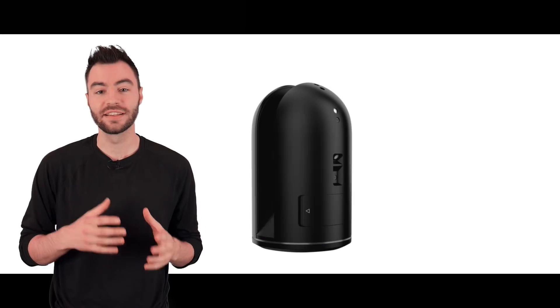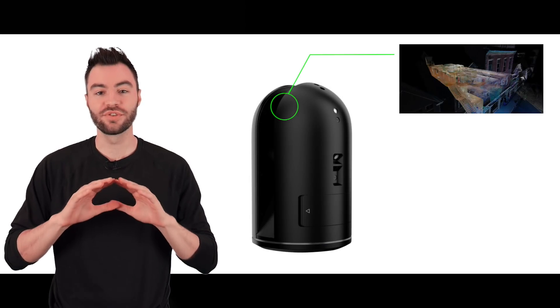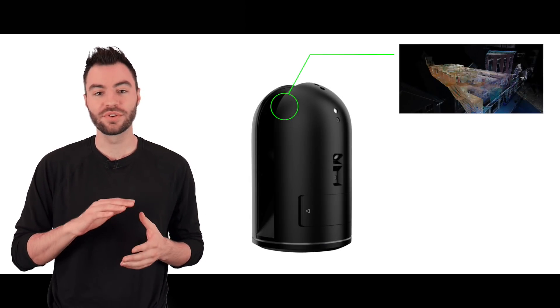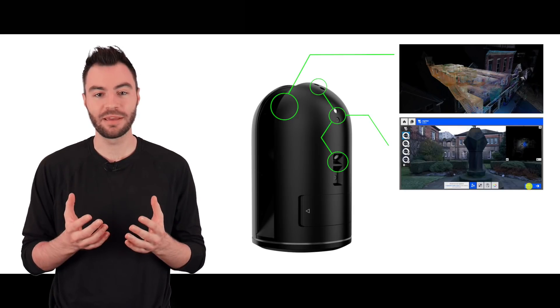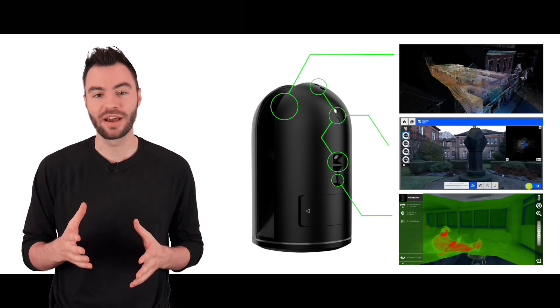Inside the BLK360 there is a laser distance meter which is used to create the point cloud. There are also three outward facing cameras which are used to create the panoramic image and a thermal camera on the side as well.